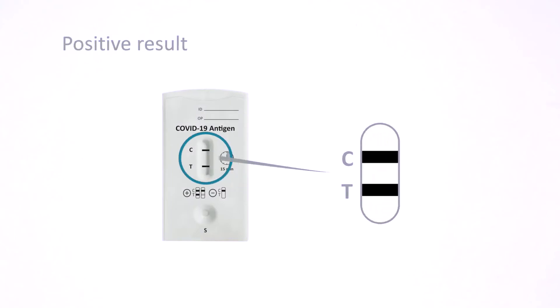Two lines, one in the control line region and another one in the test line region, indicate a positive result.